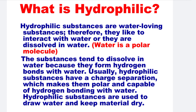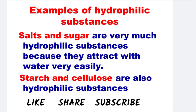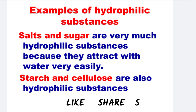Usually, hydrophilic substances have a charge separation which makes them polar and capable of hydrogen bonding with water. Hydrophilic substances are used to draw water and keep material dry. Examples of hydrophilic substances: salts and sugar are very much hydrophilic substances because they attract water very easily. Starch and cellulose are also hydrophilic substances.